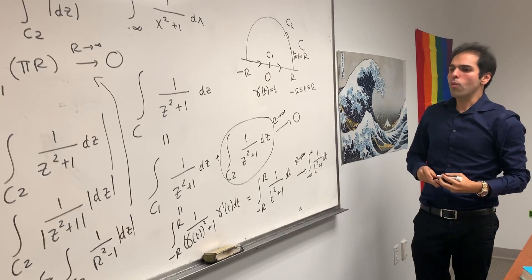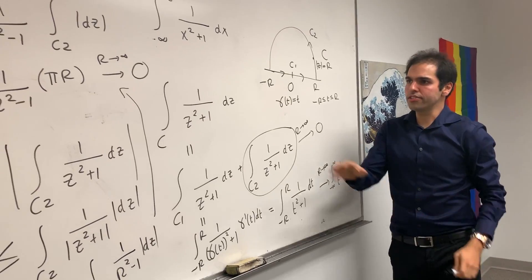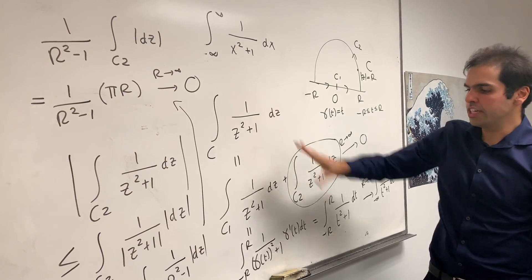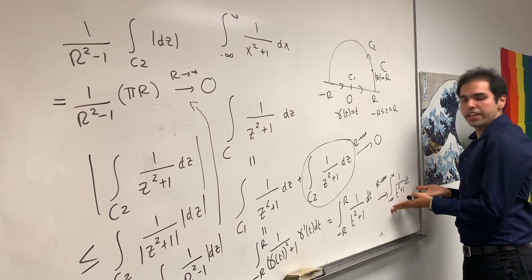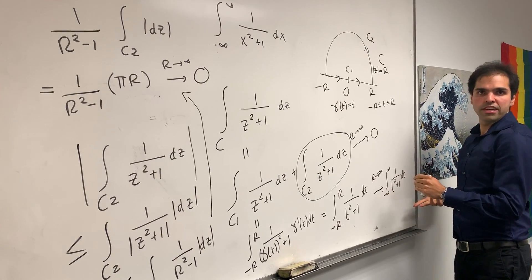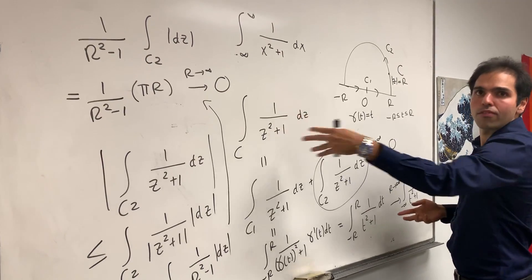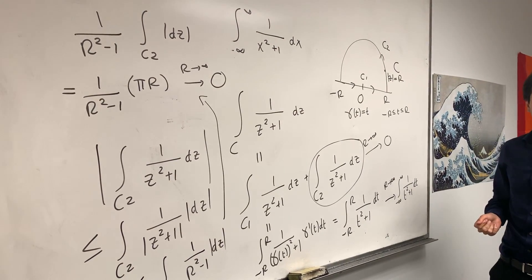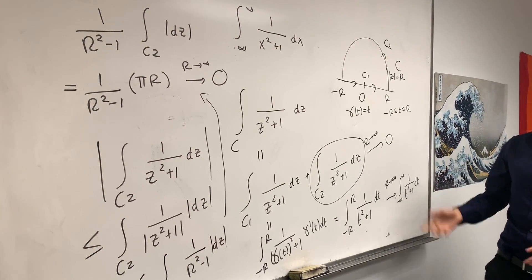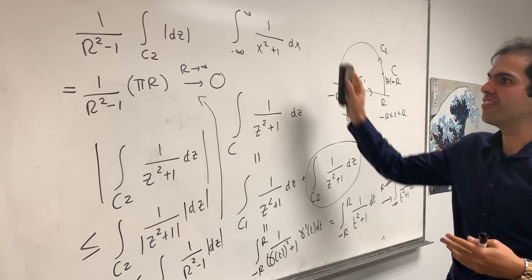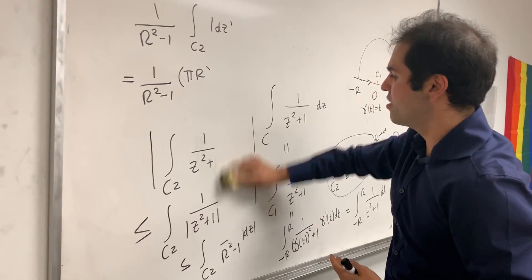So what have we shown? This complex integral here equals the integral that we want plus 0. So all we need to do is find this, figure out what this complex integral is. And for this, we have something very beautiful called the residue theorem.